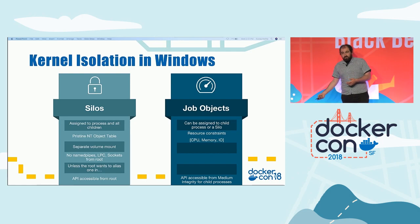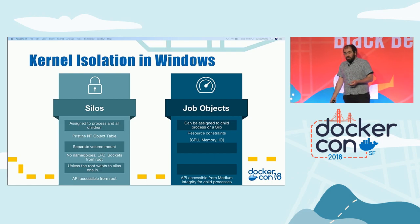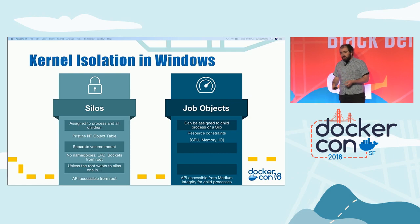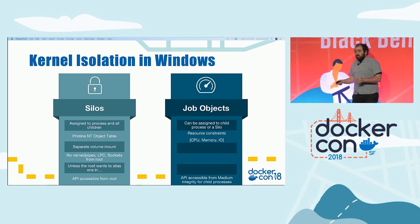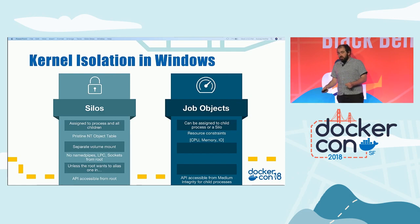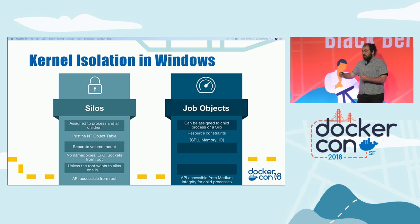Job Objects have existed in Windows since Windows 2000 and produce much of the same functionality that cgroups provides. You can apply restrictions to a parent process and its children, including CPU, memory, and I/O limitations. Instead of assigning restrictions to a specific process, we can assign them to an entire silo as a non-negotiable action — the process can no longer opt out. That gives us the ability to restrict an entire silo to whatever container constraints we want.